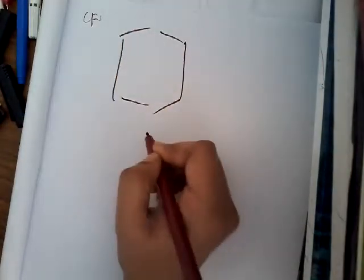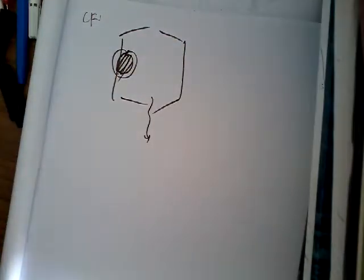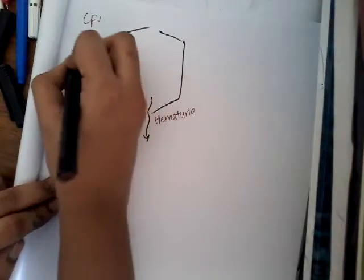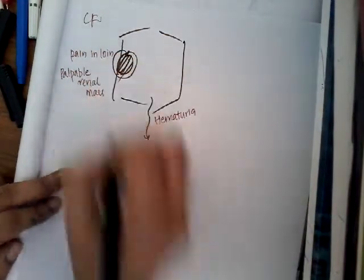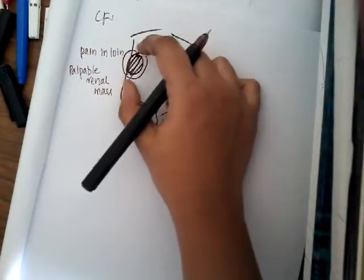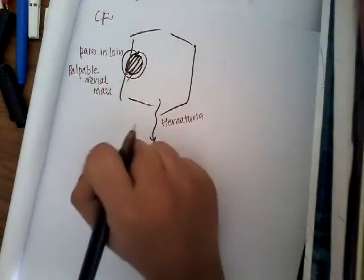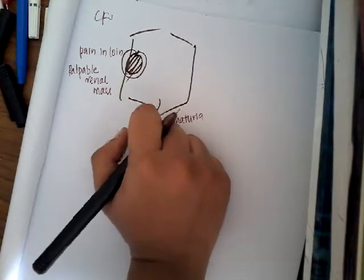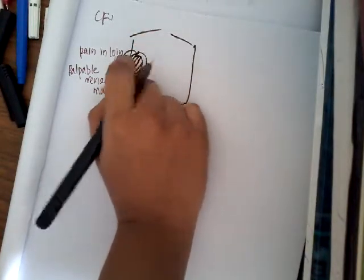The clinical features of renal cell carcinoma form a classic triad: pain in the loin, hematuria, and a palpable renal mass. The mass moves with respiration, is mobile, nodular, and hard. On percussion, there is a dull renal angle and a resonant band in front because of the colon.